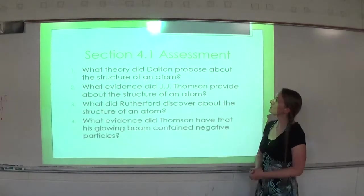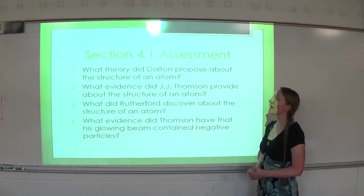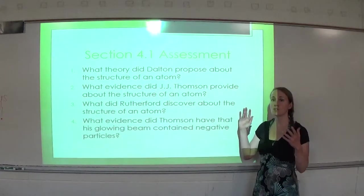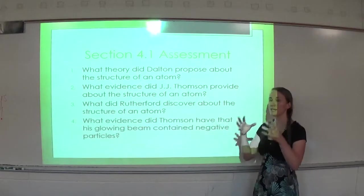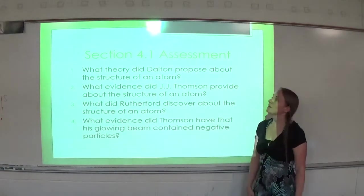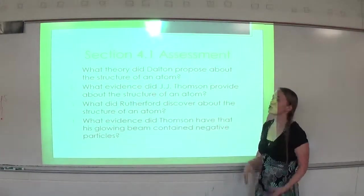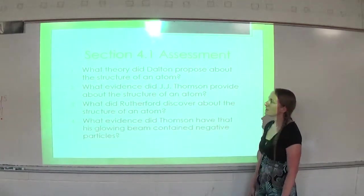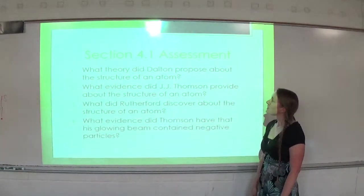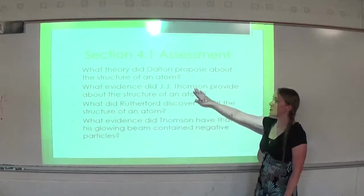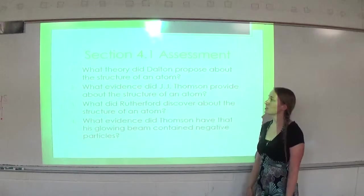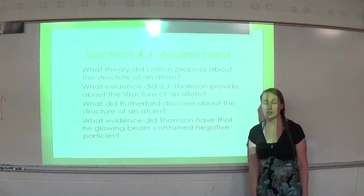Review question one: what theory did Dalton propose about the structure of the atom? Dalton proposed that the structure of the atom was just a solid sphere. Question two: what evidence did J.J. Thomson provide about the structure of the atom? Thomson used the cathode ray tube to discover the electron — J.J. Thomson discovered the electron.